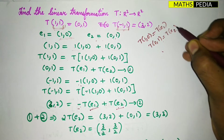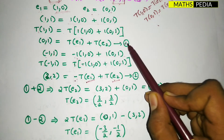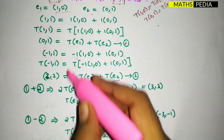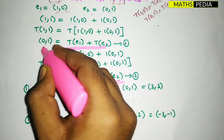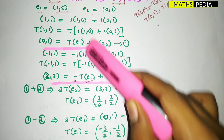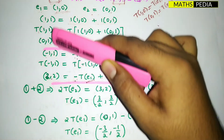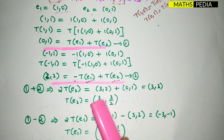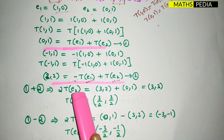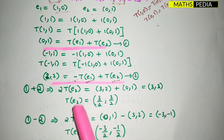Adding both equations, the T(e1) terms cancel. We get 2·T(e2) equal to (0,1) + (3,2) = (3,3). Dividing both sides by 2, T(e2) = (3/2, 3/2). We have now found T(e2).